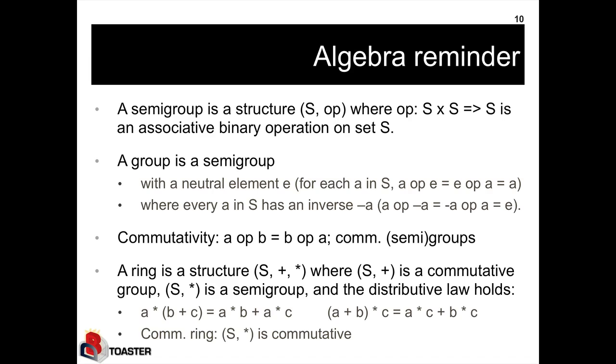A ring is a structure with two operations, let's call them plus and multiplication, where plus is a commutative group and multiplication is a semigroup and furthermore the distributive law holds. A commutative ring is a ring where the multiplication is also commutative.